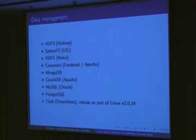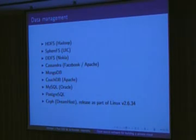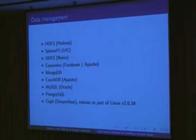These are just some of the packages that are available. For example, Hadoop has HDFS. UIC, the University of Illinois Chicago, has something called SphereFS. Nokia has something called DiscoFS — DDFS, Disco something FS. Facebook released Cassandra, which is now part of Apache. There's MongoDB, there's CouchDB, which is also part of Apache. Oracle has MySQL because they bought out MySQL. PostgreSQL is, I think, an independent company. And then DreamHost released Ceph, which is actually just integrated into Linux itself.